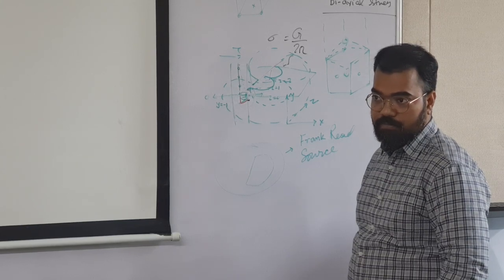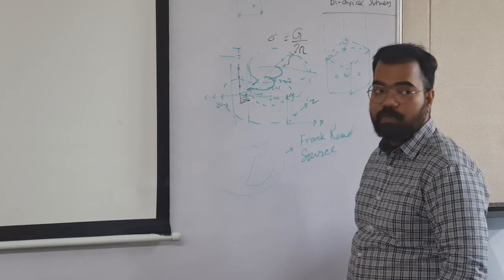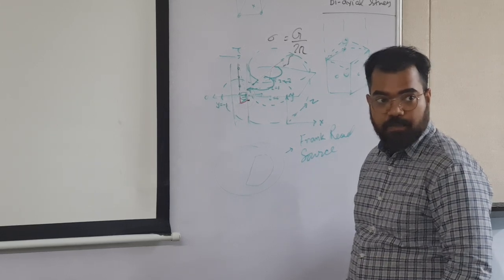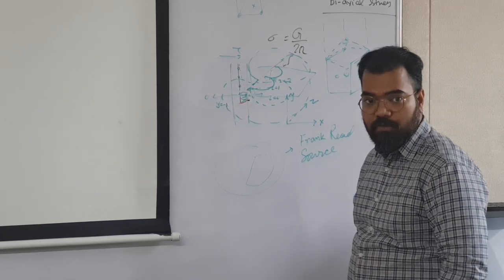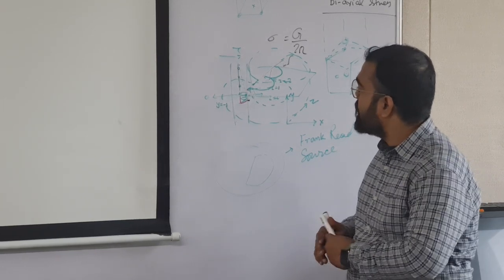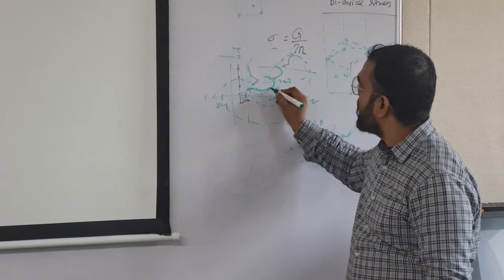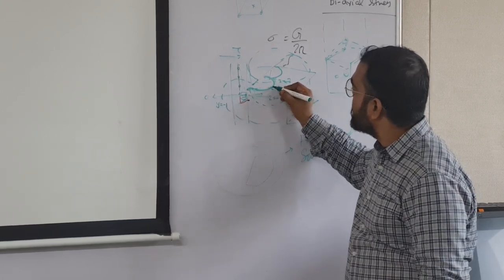The real dislocations are not pure edge or screw. And you can find some pictures for visualization in the book of Hall and Bacon which I will share on Google Classroom and here also when this bow out, this part of dislocation, when you see this part, what is happening at this part?